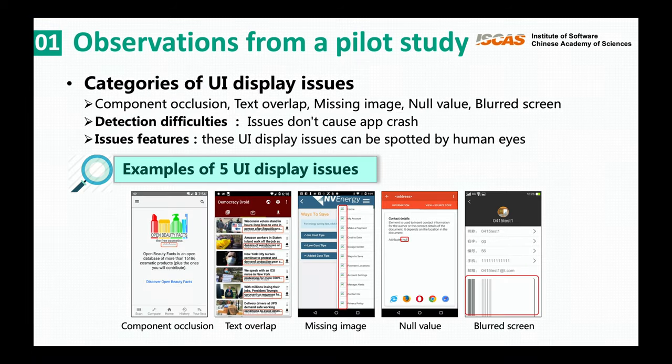As shown in the figure, we notice that there are different types of UI display issues. Following the card sorting method, we classify those UI display issues into five categories: component occlusion, text overlap, missing image, non-value, and blank screen. These findings confirm the severity of UI display issues and motivate us to design an approach to automatically detect these issues.